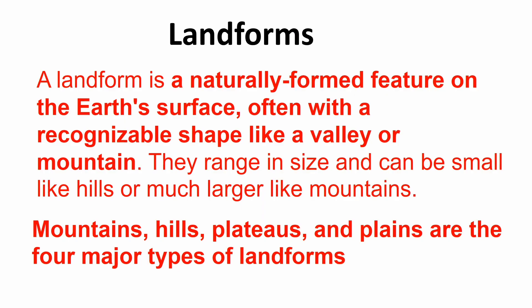A landform is a naturally formed feature on the earth's surface, often with a recognizable shape like a valley or mountain. They range in size and can be small like hills or much larger like mountains. Mountains, hills, plateaus and plains are the four major types of landforms.